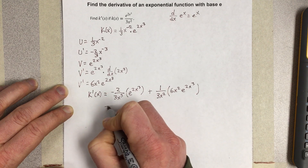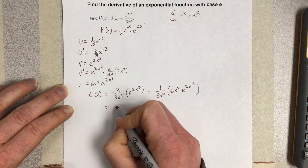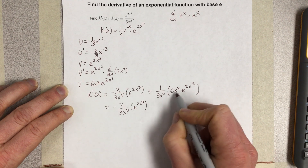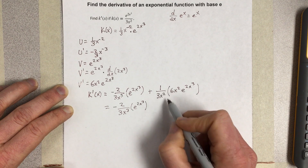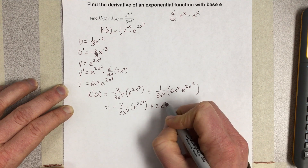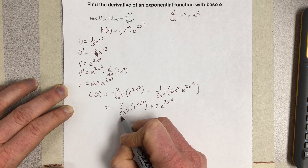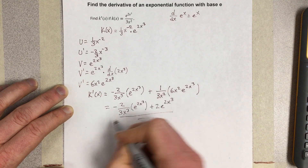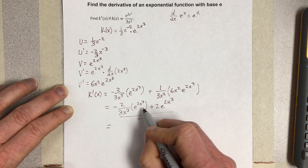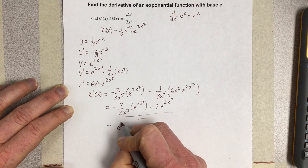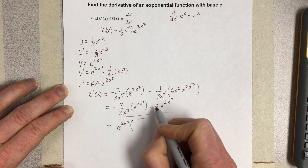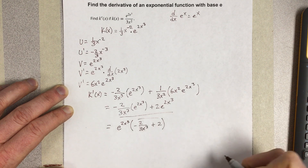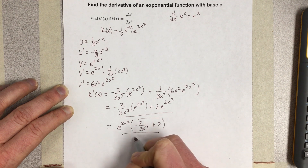Simplifying a little further: the right side gives negative 2 over 3x cubed times e to the 2x cubed, and then 6x squared over 3x squared simplifies to just 2, so we get plus 2 e to the 2x cubed. We can factor e to the 2x cubed out front, leaving e to the 2x cubed times the quantity negative 2 over 3x cubed plus 2. That's the simplified derivative of the function.